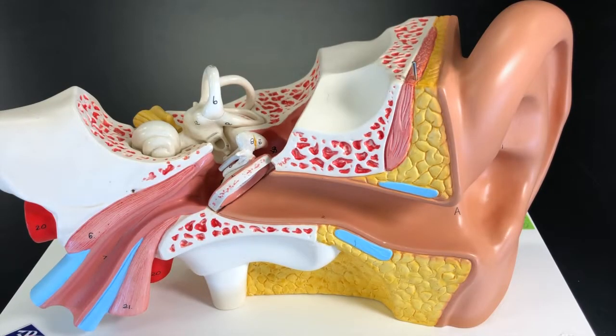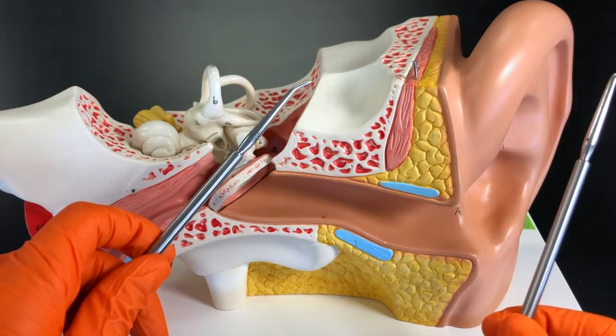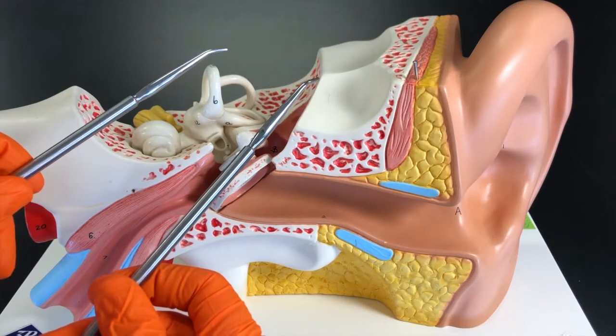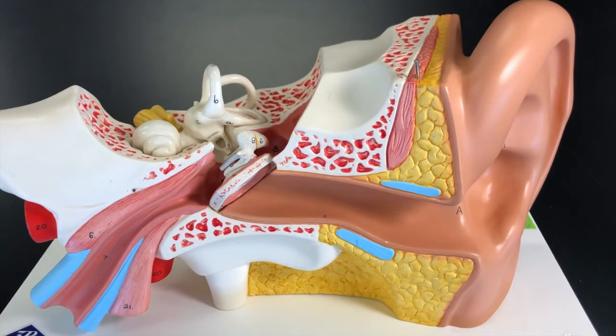Let's start off by looking at the anatomic regions of the ear. First we have the external ear, then we have the middle ear, and then the inner ear. The structures of the external ear include the...